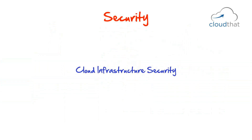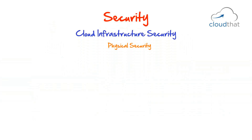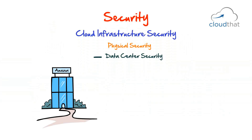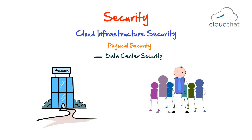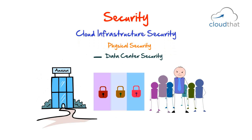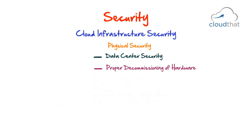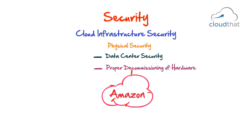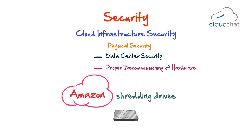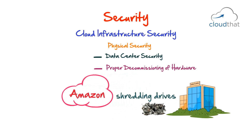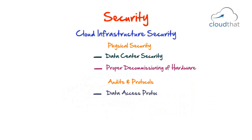Cloud data centers are generally super secure. Companies like Amazon don't release the names or locations of their data centers. Employees working in data centers have company names left blank on their IDs. There are many layers of security, and only authorized people doing maintenance tasks are given access to the data center floor for a short period of time. Cloud providers also follow proper industry standards for decommissioning hardware — Amazon, for example, shreds hard drives so they only leave shredded.